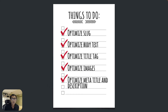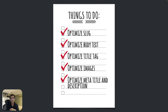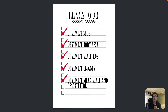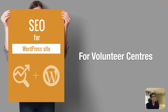So we covered those five things today: optimizing the slug, optimizing body text, optimizing the title tag, optimizing images, and optimizing meta title and meta description. As you saw throughout, this is not really difficult — you don't need to hire an SEO company to do this. If you already have a WordPress website, you can implement these today or tomorrow. That's it for today — I hope this was helpful, and I'll see you next time.